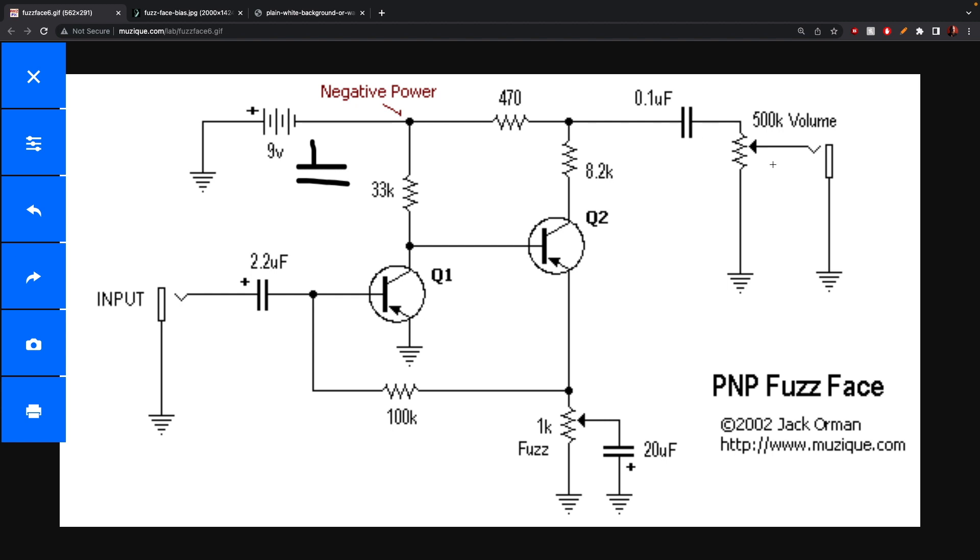So the output impedance, if we start here looking out towards ground, this again depends on where you set the volume knob, but maximum, there will be 500k going down to ground here. And then you also have to remember that audio signals see both ends of your voltage as ground. So we got to consider this path here to our negative power, to our negative nine volts.